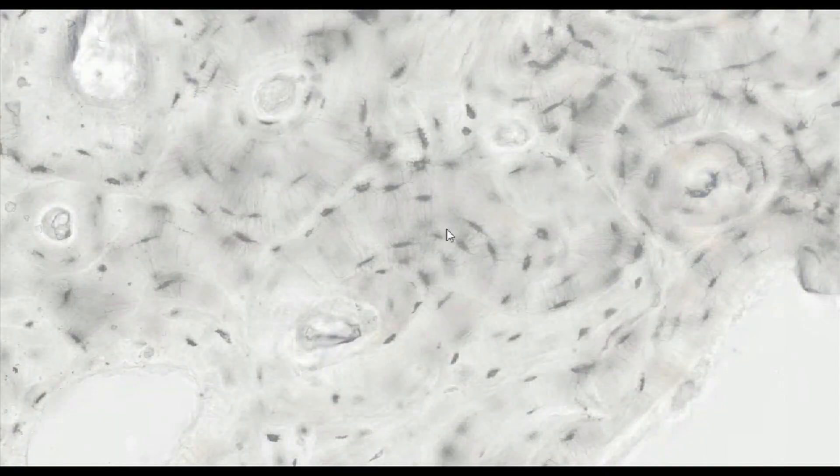Between the lamella there are lacunae occupied by osteocytes in the living bone. The used dye, gentian violet, in addition to lacunae, also fills the tubules that connect all the lacunae in the osteon.